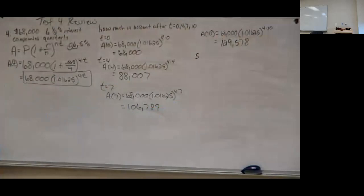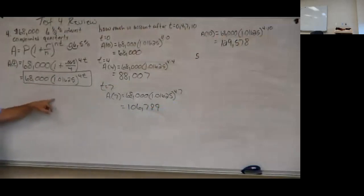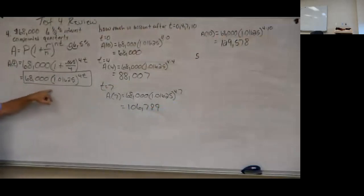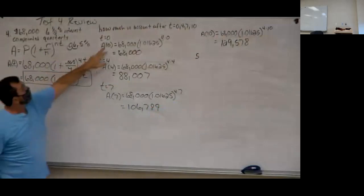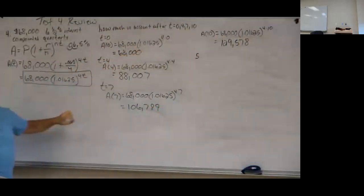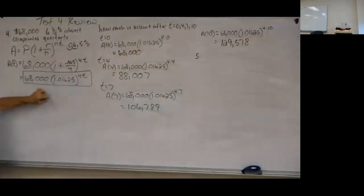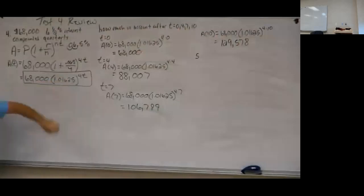A little tip: you can put this formula into Y1, replace T with X, go to the table, and look up X values of 0, 4, 7, and 10. It'll give you all the money values right there.